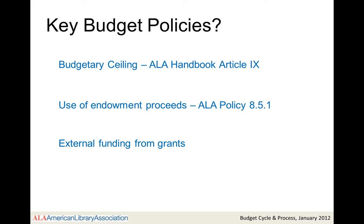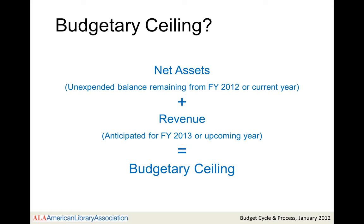I will mention three key budget policies: the budgetary ceiling, as outlined by ALA Handbook Article 9; the use of endowment proceeds, as outlined by ALA Policy 8.5.1; and funding from external grants. The budgetary ceiling is a concept that has served the Association well over the years. For divisions and roundtables, budget development begins with the ending result of the cumulative net asset balance from the previous year. When combined with the anticipated — i.e., budgeted — revenue for the upcoming year, you have the budgetary ceiling.